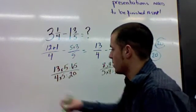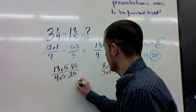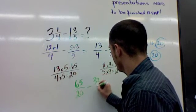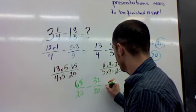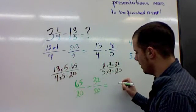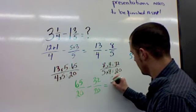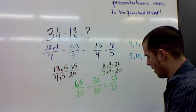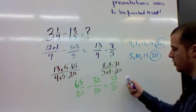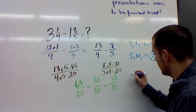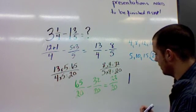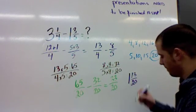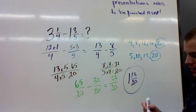Now we can easily do the subtraction. We can write out the subtraction statement. 65 over 20 subtract 32 over 20. And what you're going to end up with is going to be 33 over 20. However, because that's an improper fraction, we're going to have to write this out. But the end answer is going to be 1 and 13 over 20. That's your final answer.